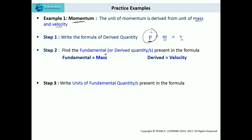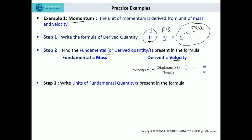Now the second step: find the fundamental or derived quantities present in the formula. As discussed earlier, if both are fundamental quantities then it's straightforward. But here we have one fundamental quantity, mass, and another quantity, velocity, which is a derived quantity. So in this case we first need to convert velocity in terms of fundamental quantities. Velocity is displacement upon time. The fundamental unit of displacement is meter and the fundamental unit of time is second. So velocity in terms of fundamental units is meter per second.